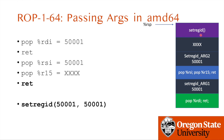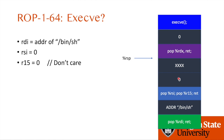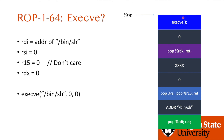To call execve after setregid, we do the same thing. To set the first argument, we return to pop RDI, return — then RDI will be the address of /bin/sh. Then pop RSI, pop R15, return — so RSI will be zero, and R15 we don't care about. Then pop RDX, return — or pop RDX, RBP, return depending on available gadgets — set RDX to zero. Then call execve. In 32-bit, the function address comes first then the pops. But in 64-bit, we need to pop the register values first to set arguments, then call execve.